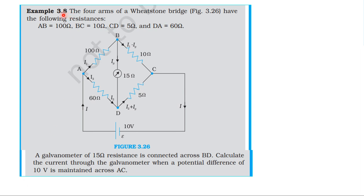From the NCERT textbook, topic: Current Electricity, Example 3.8. The four arms of a Wheatstone bridge have the following resistances: AB = 100 ohm, BC = 10 ohm, CD = 5 ohm, DA = 60 ohm. A galvanometer of 15 ohm resistance is connected across BD. Calculate the current through the galvanometer when a potential difference of 10 volt is maintained across AC.